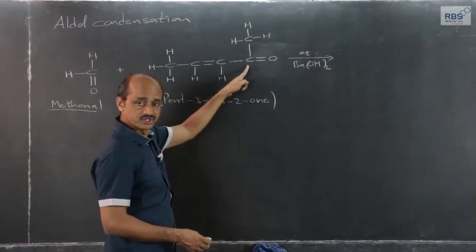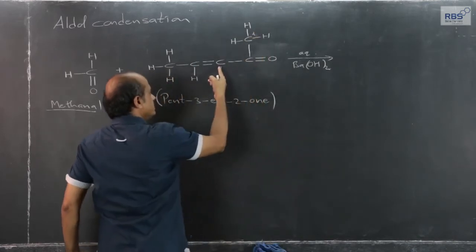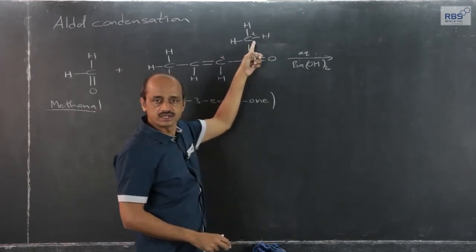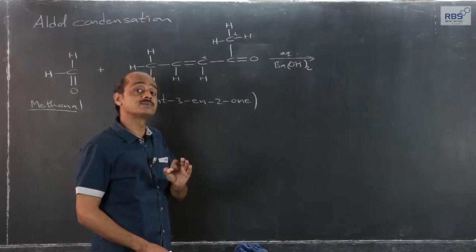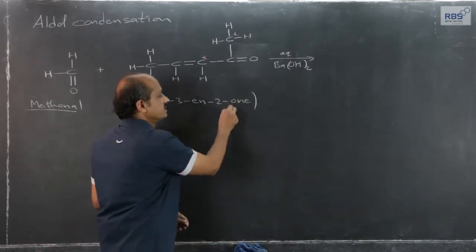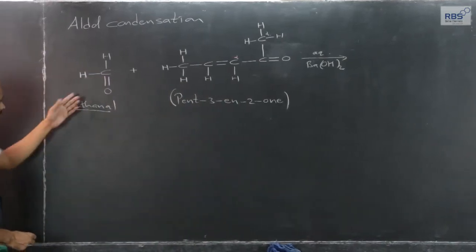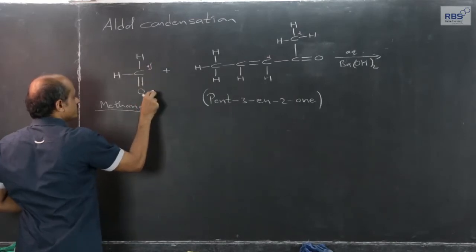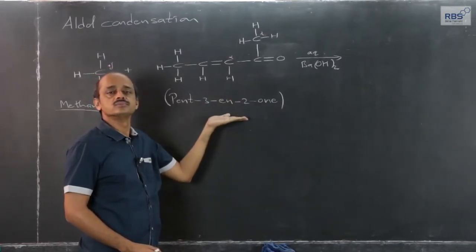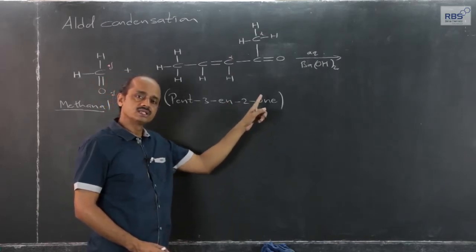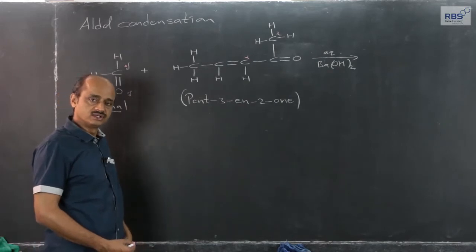If we consider this ketone, this is the alpha carbon atom on one side of the ketone; on the other side is also an alpha carbon atom. Alpha hydrogen atoms are present on both sides of the carbonyl group. So the first step — formation of a carbanion — is possible here. Once the carbanion is formed, it can attack the polar carbonyl group (delta positive carbon, delta negative oxygen), and the carbanion will attack this aldehyde. Aldol reaction or aldol condensation will then be possible.